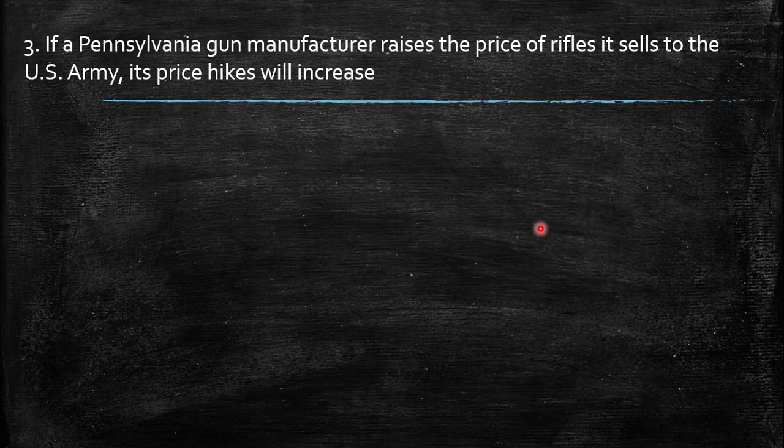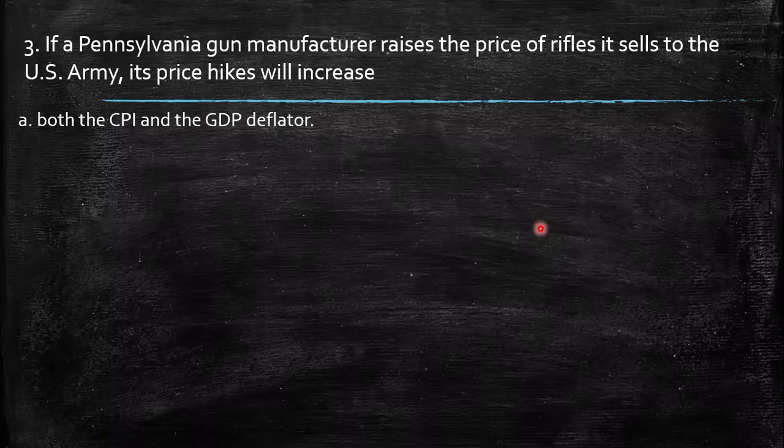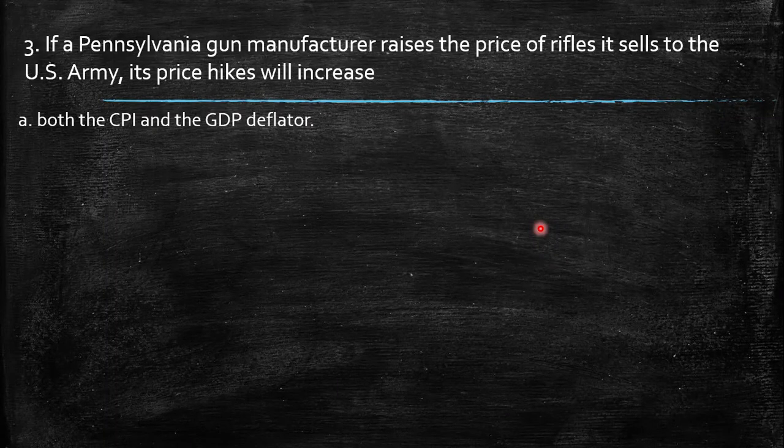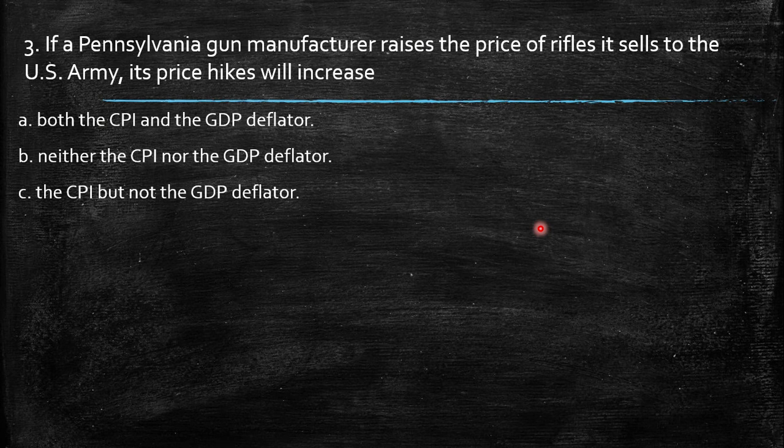Three, if a Pennsylvania gun manufacturer raises the price of rifles it sells to the U.S. Army, its price hikes will increase both CPI and GDP deflator, neither the CPI nor the GDP deflator, the CPI but not the GDP deflator, or the GDP deflator but not the CPI.